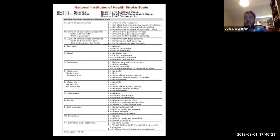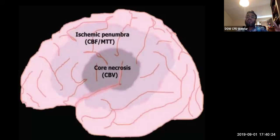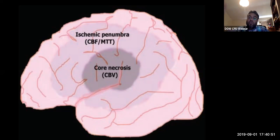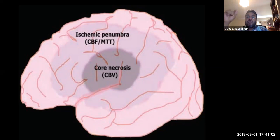By thrombolyzing we aim to save the penumbra — the surrounding area at risk. Central brain arteries are end arteries, which is why AF-related embolic strokes are large and have poor prognosis, as the brain has no time to develop collaterals. Large artery thrombosis strokes can have better prognosis because collaterals develop. In a stroke, collaterals are what save you. The central infarcted area cannot be saved; you are trying to save the surrounding penumbra.